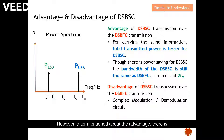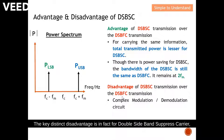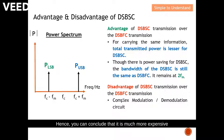However, there is also a disadvantage of DSB-SC compared to DSB-FC. The key disadvantage is that DSB-SC requires a more complex modulation and demodulation circuit, and hence it is much more expensive in terms of components in order to recover back the original signal.